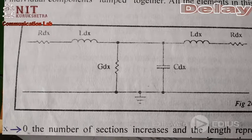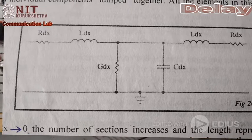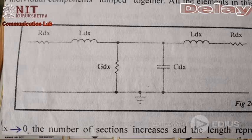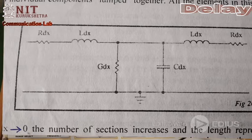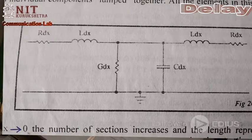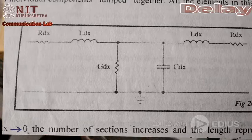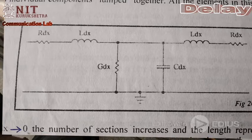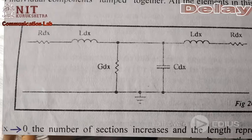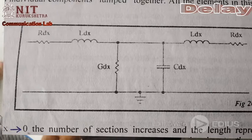So this becomes a closer approximation. When you connect several sections, it approximates the actual two-wire line. There are four quantities — R, L, G, and C — and these are called the primary line constants.